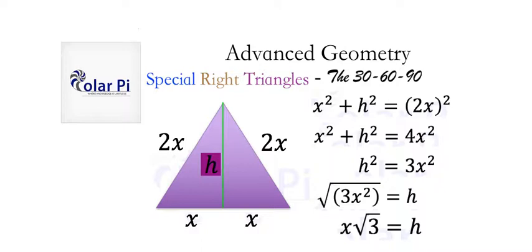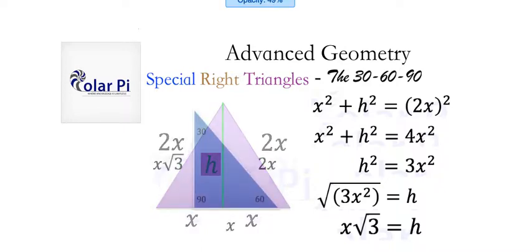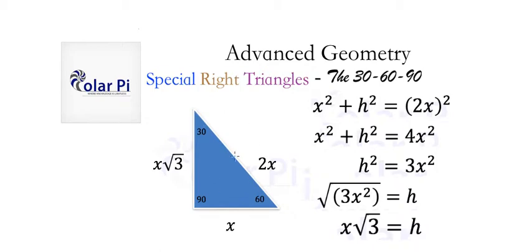To summarize: in a 30-60-90 degree triangle, when the side opposite the 30° angle has value x, the side opposite the 60° angle has value x√3, and the hypotenuse has value 2x.